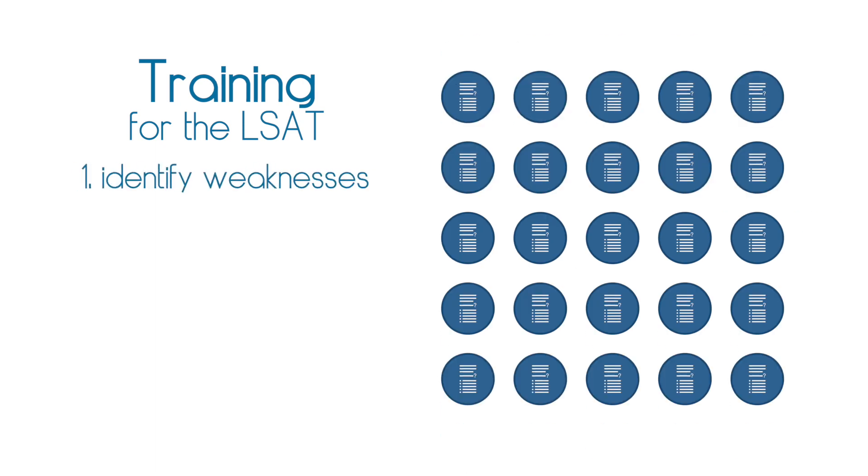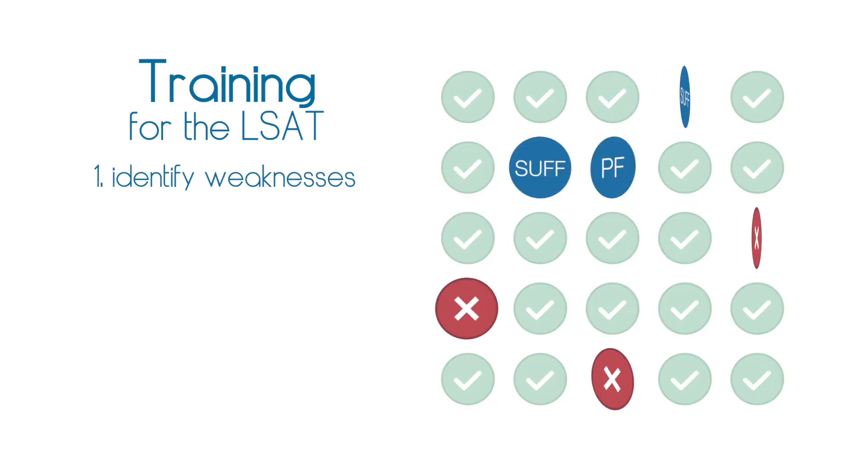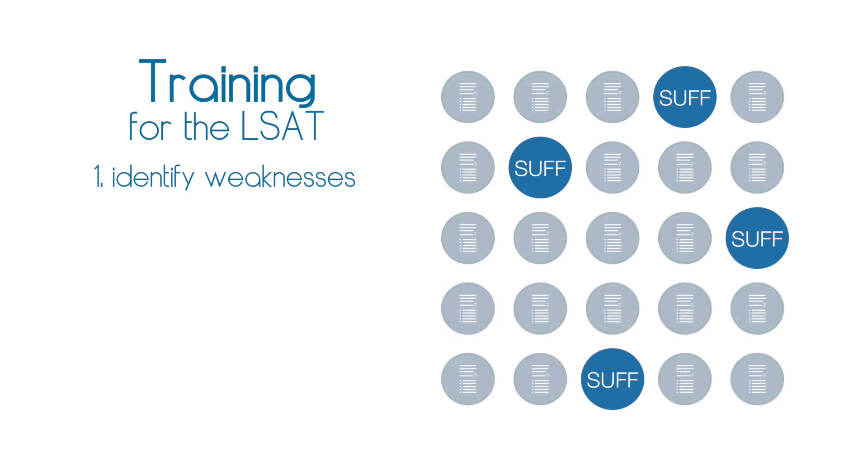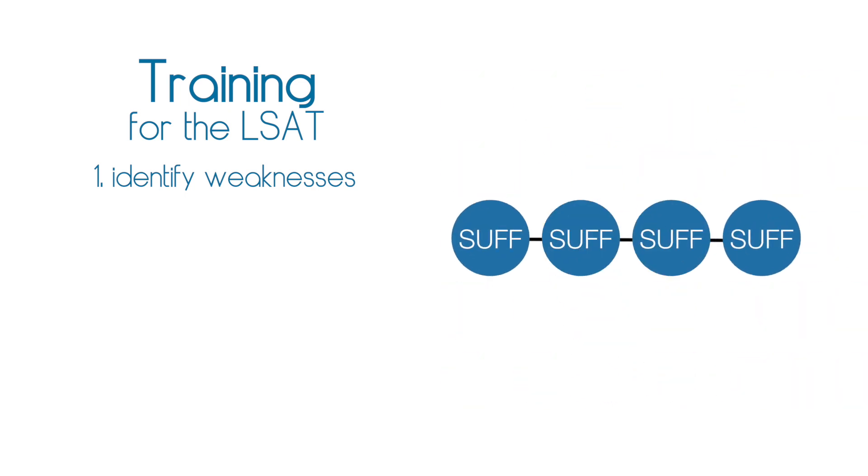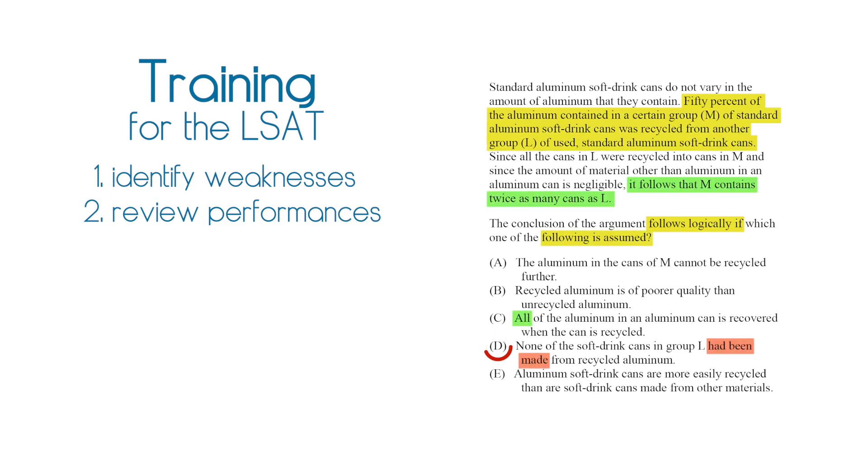First, you need a coherent system so you can see connections between questions and focus on weaknesses. Have trouble with sufficient questions? Don't just wait for those to show up on a timed test. Understand the common thread to all the sufficient questions you're missing. Also, review everything you do, no matter what. This is what enables you to spot patterns in the first place.